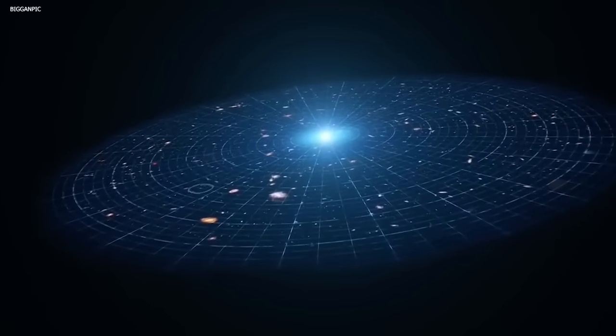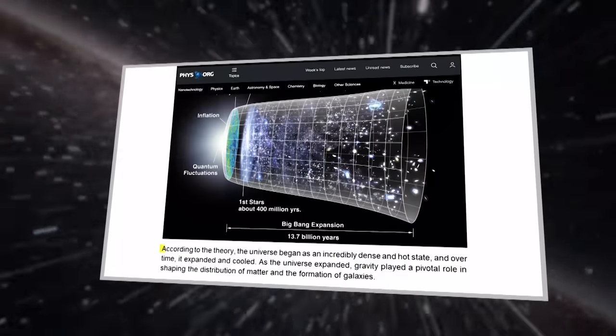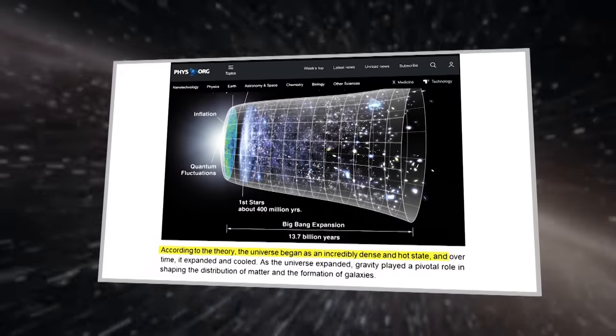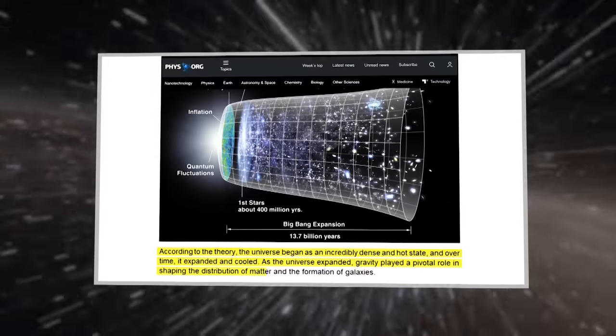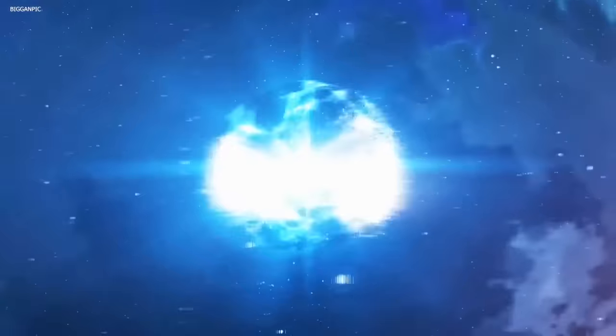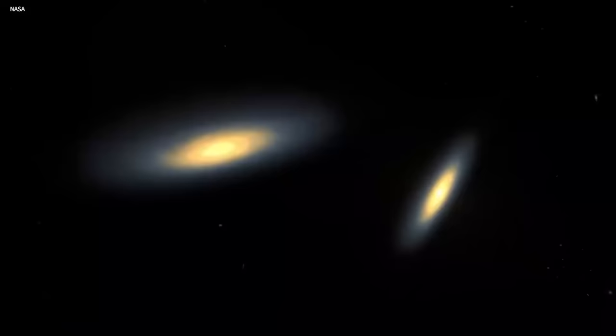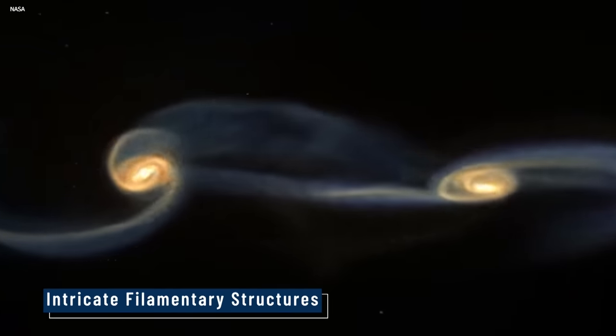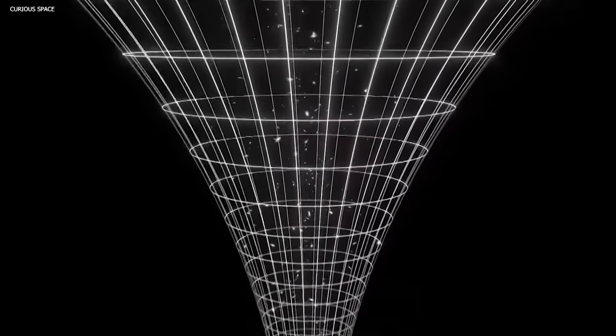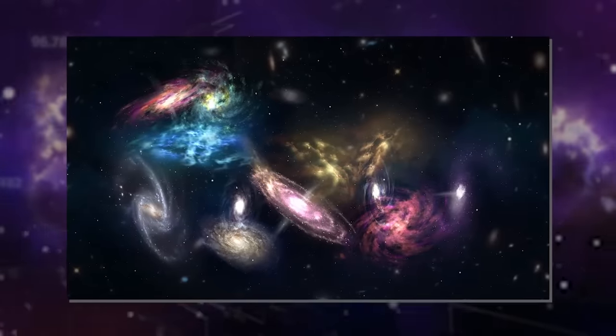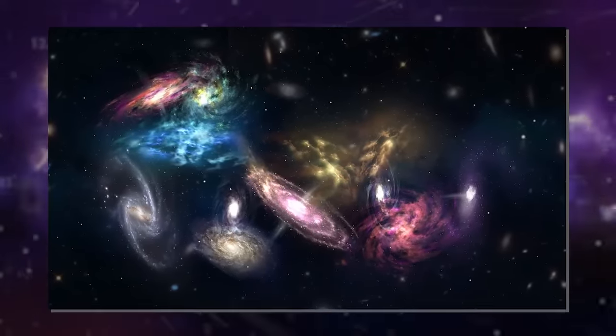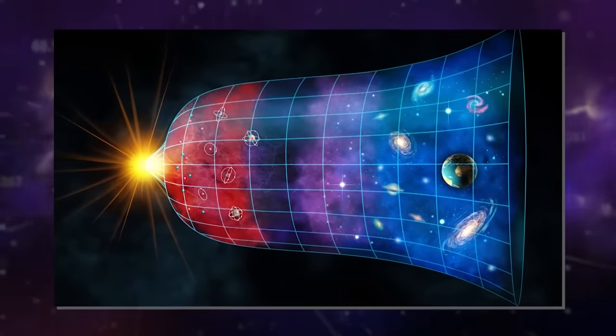Galaxies tend to congregate together in vast groups, clusters, and superclusters, forming intricate networks that extend across the cosmos. This observed large-scale structure aligns with the predictions made by the Big Bang theory. According to the theory, the universe began as an incredibly dense and hot state, and over time, it expanded and cooled. As the universe expanded, gravity played a pivotal role in shaping the distribution of matter and the formation of galaxies. The gravitational effects predicted by the Big Bang theory are consistent with what we observe today. Gravity draws matter together, causing galaxies to cluster in certain regions and form intricate filamentary structures that connect them.